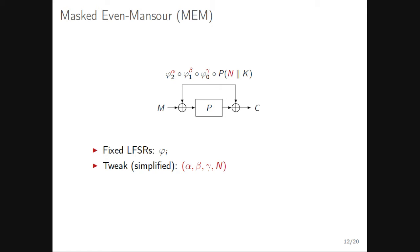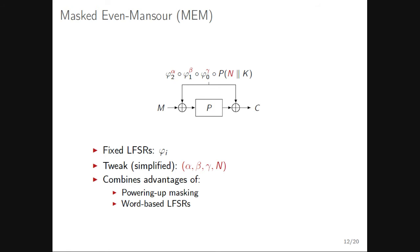The tweak is composed of four values alpha, beta, gamma, and the nonce. A permutation generates a base value by concatenating the nonce n with the key and applying the permutation. Three LFSRs — phi_0, phi_1, phi_2 — operate on this base value to generate new masks. This combines advantages of powering-up masking and word-based LFSRs: you evaluate the permutation once, then only do LFSR-based mask updates — no Galois field arithmetic needed.